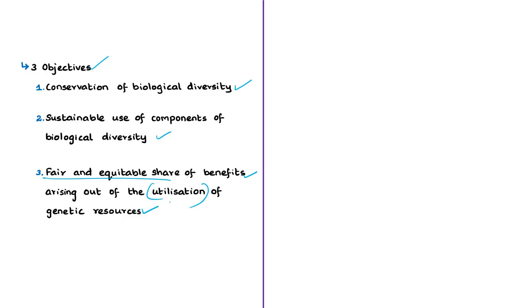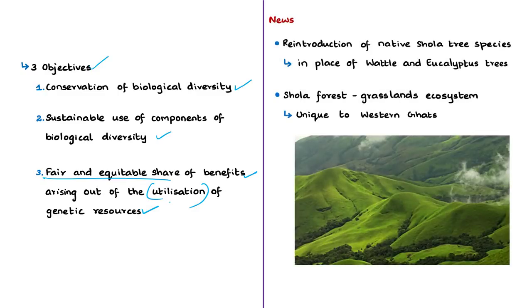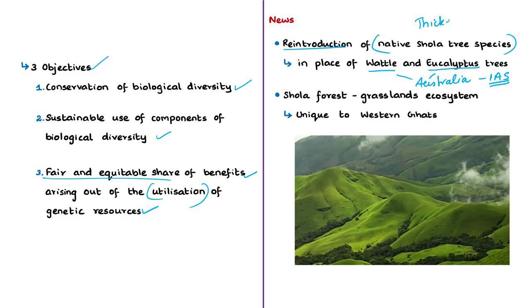Now let us discuss the news article based on this background. The news article mentions that the forest department of Tamil Nadu is reintroducing native shola tree species into the habitats where they were displaced by invasive alien species — specifically wattle and eucalyptus trees. These tree species are native to Australia and are now invasive alien species distributed in the Western Ghats of India. They were introduced for afforestation and regenerate rapidly after fire, forming dense thickets that affect native species.